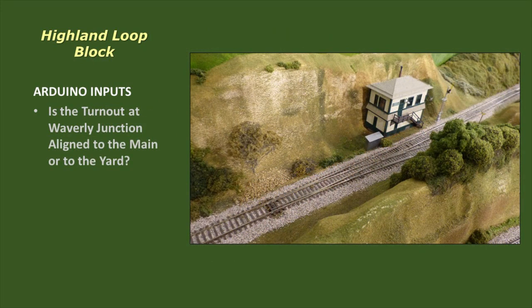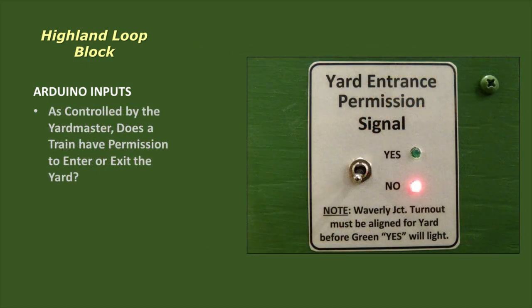Second, is the turnout at Waverly Junction aligned to the main, or to Waverly Yard? And finally, has the Yardmaster granted permission for a train to enter the yard?